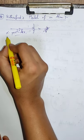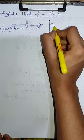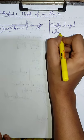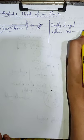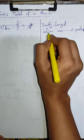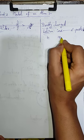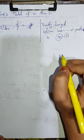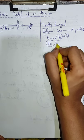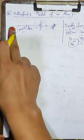Ab dekhte hain ki results kya milte hain. Usse pehle I would like to tell you ki alpha particles kya hote hain — this is an important point. Doubly charged helium ions are known as alpha particles. Helium ke ions hain hamare paas, woh bhi jo doubly charged hain. Helium ka atomic number do hai — HE 2 positive — yeh hota hai alpha particles. Doubly charged helium particles ko alpha particles bolte hain, aur usi ki ek beam humne thin gold foil pe hit karai hai.